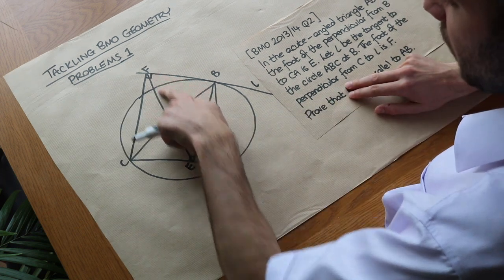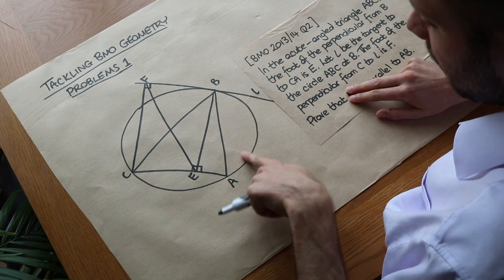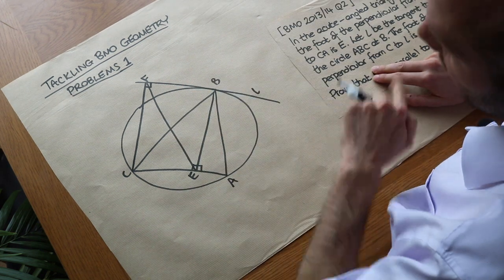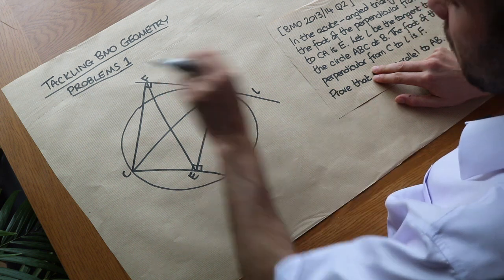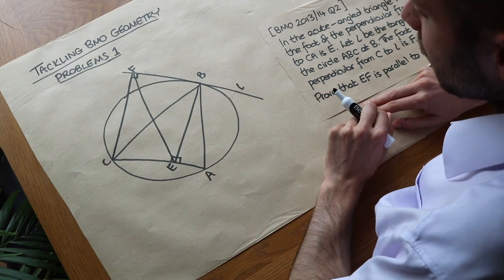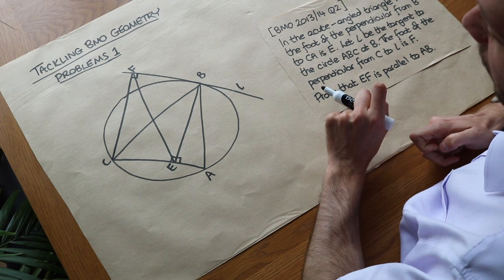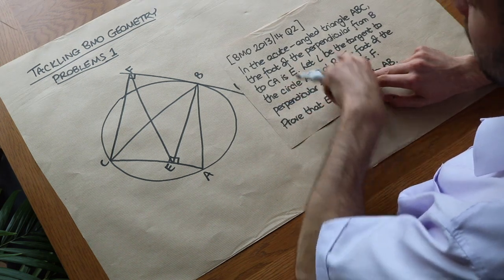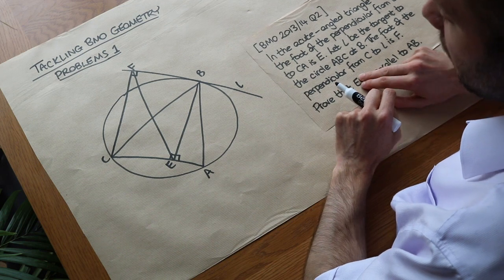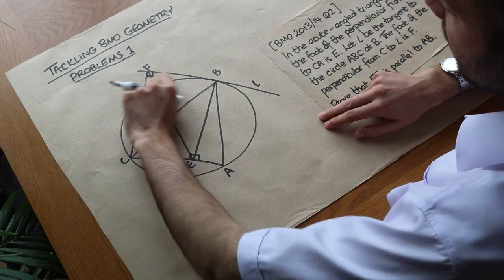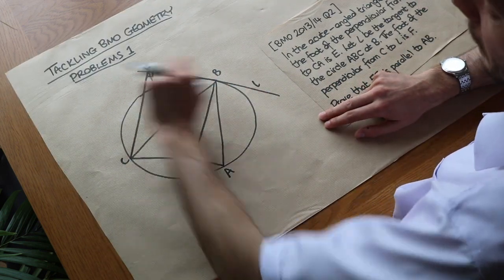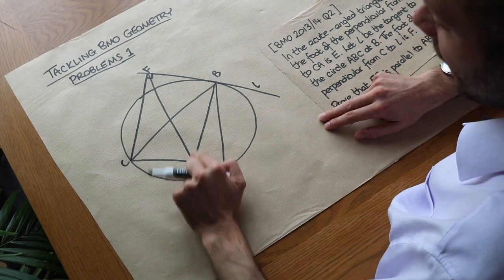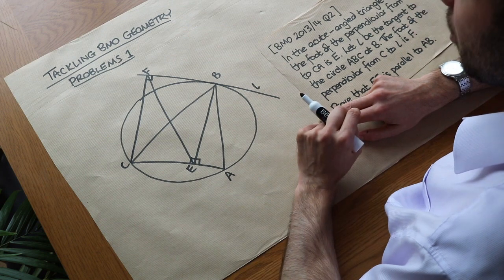Now just because I've drawn my diagram a little bit squiffy it means that EF doesn't look quite parallel to AB. Under such circumstances you might want to redraw your diagram but I'll stick with what I've got. Now let's try and model the information in the diagram. We have to use every single piece of information in the problem to solve it. So for example if we're told this is a tangent we have to use the fact that it's a tangent in some way, and the right angles must be used in some kind of way too.